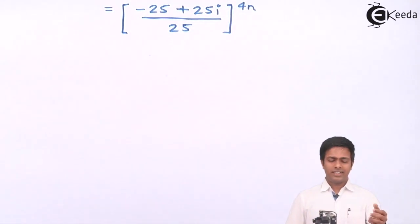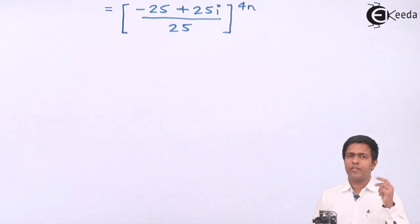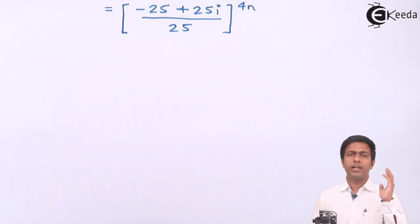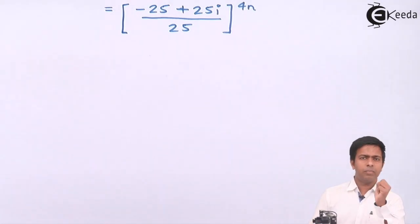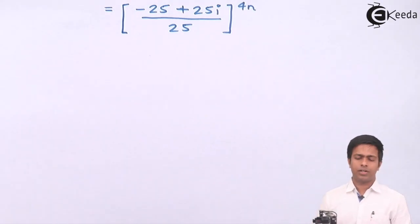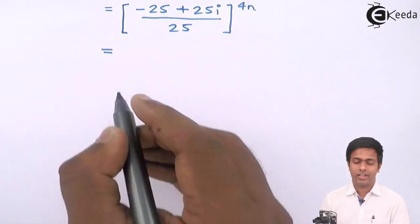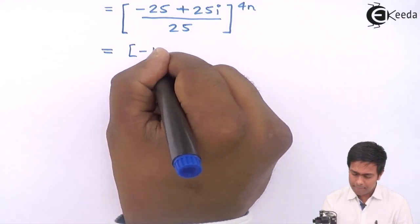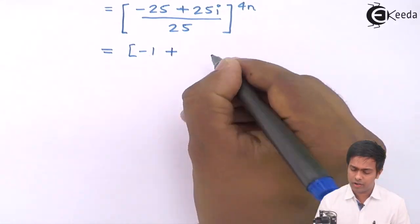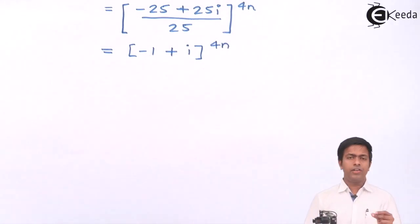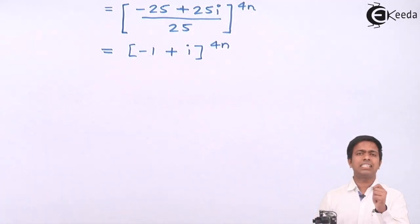We have removed the imaginary part from the denominator. Dividing numerator and denominator: -25/25 = -1 and 25i/25 = i. So the number in standard form is -1 + i.